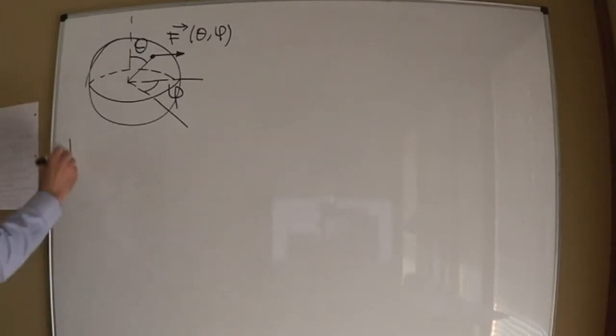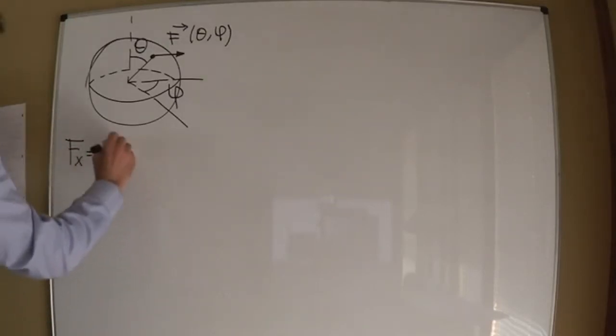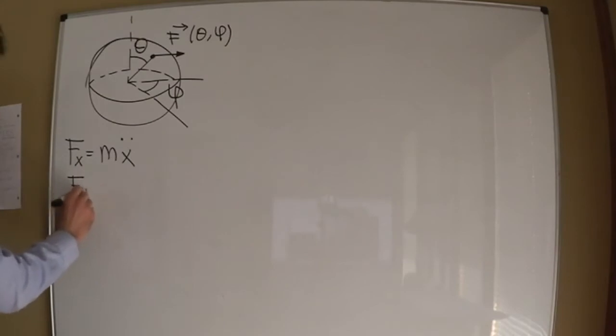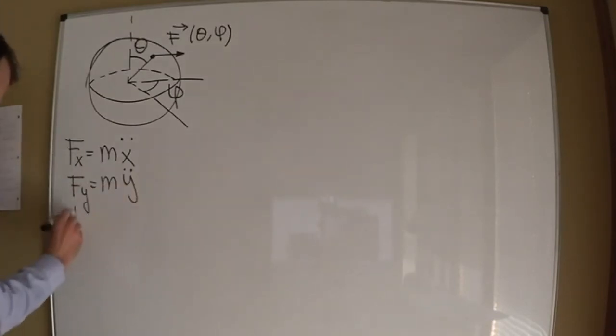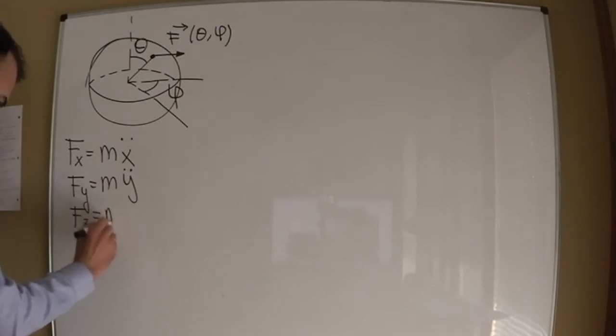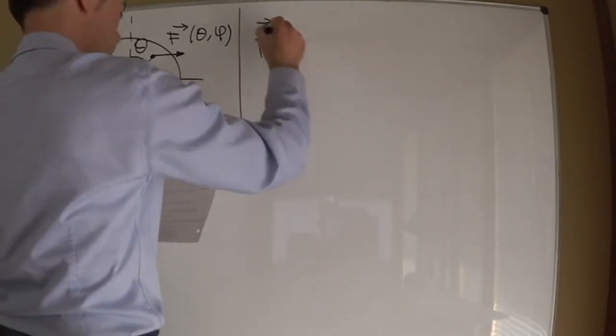As the particle is constrained to move on the surface of a sphere, we'll work with spherical coordinates. In these coordinates, the unit vectors are r-hat, theta-hat, and phi-hat. In Cartesian coordinates, Newton's second law is F_x = m x-double-dot, F_y = m y-double-dot, F_z = m z-double-dot. The total force in spherical coordinates reads in terms of r, theta, and phi.